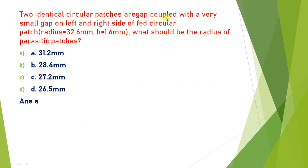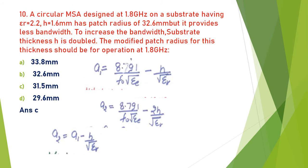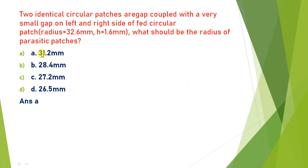Identical circular patches are gap coupled with a very small gap on the left and right side of the feed circular patch. The parasitic patch must have a radius slightly less than the feed patch. The feed patch radius is 31.5 mm, so the parasitic patch radius is closest to 31.2 mm. The answer is A.